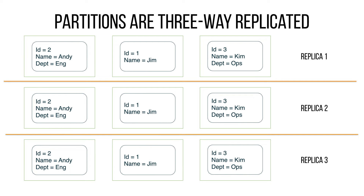In Dynamo, partitions are replicated three ways. When you write to Dynamo, you get an acknowledgement that at least two of the replicas have received the write operation. When you read from Dynamo you have a choice: eventual consistency read or strongly consistent read. The default is eventual consistency, meaning you may read from a replica that hasn't been updated yet — though this is uncommon unless you're reading extremely fast. If you want to be 100% sure, you can request a strongly consistent read, but be aware it is double the price of a normal read.